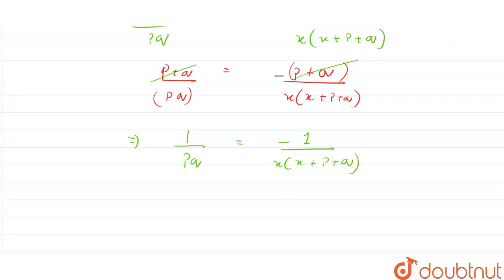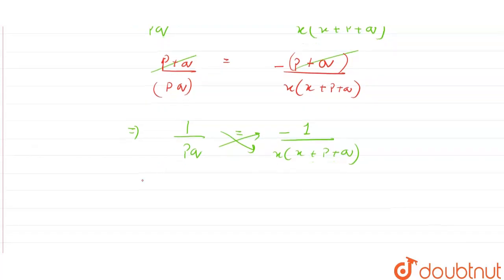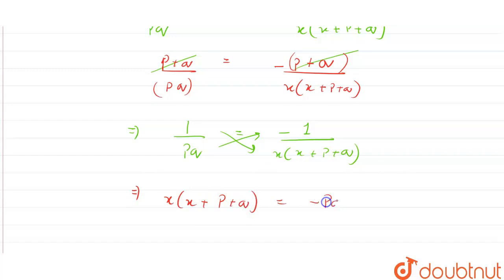If we now cross multiply these terms, then we will get that here this would be x times (x + p + q) and minus of pq.